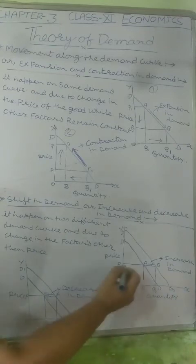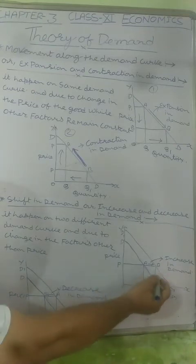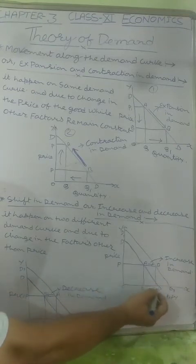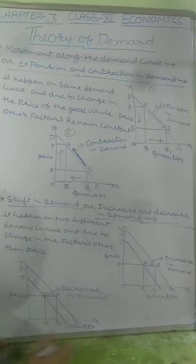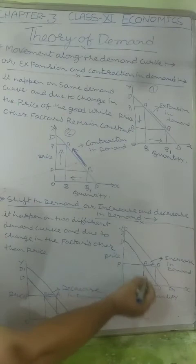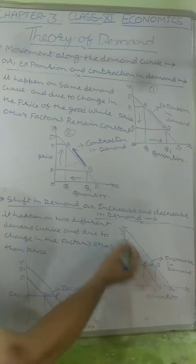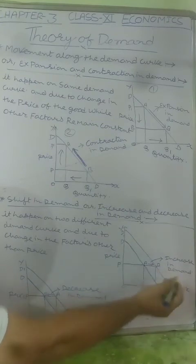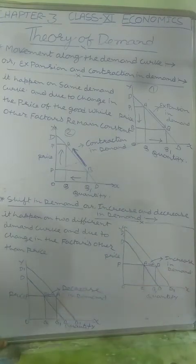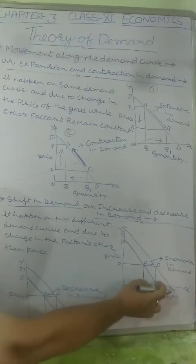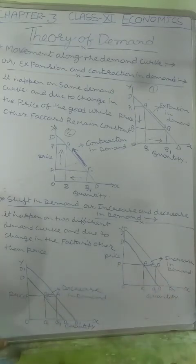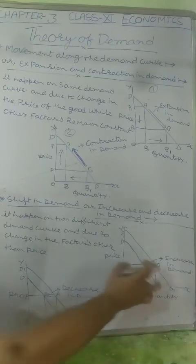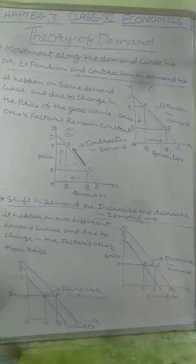On that same price, the consumer is able to purchase more quantity of that good — moving from Q to Q1. The consumer was previously at point A on demand curve DD, and now moves to point B on demand curve D1D1. This travel from A to B is called increase in demand — the consumer has increased the quantity demanded at the same price.